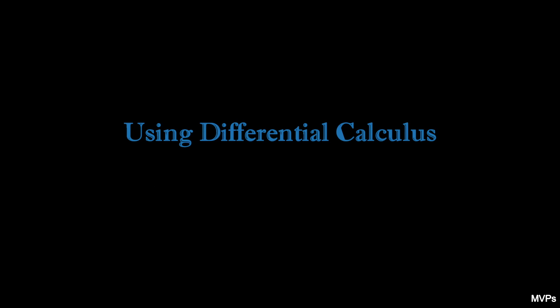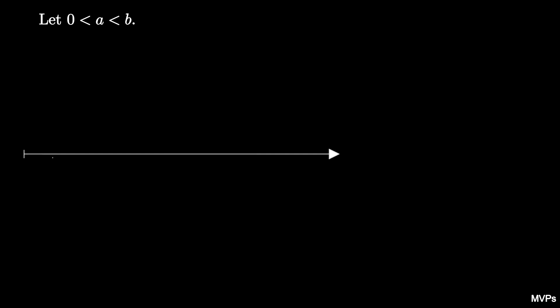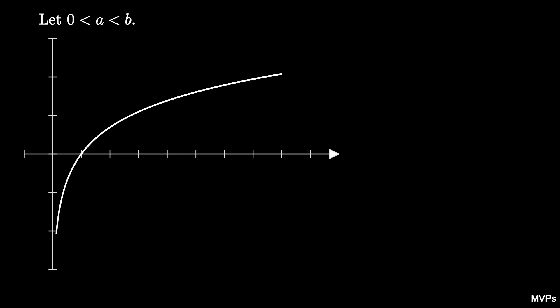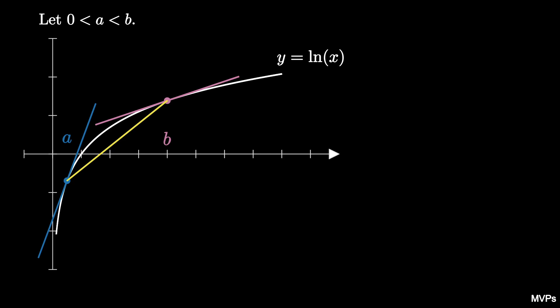Let's start off using differential calculus. To do this, we start with two positive real numbers a and b with a less than b. Then we consider the graph of the function y equals the natural log of x, which is an increasing and concave down function. We can use this graph to draw the tangent line at the point x equals a, and also draw the tangent line at the point x equals b. And finally, we can draw the secant line between the two points x equals a and x equals b.